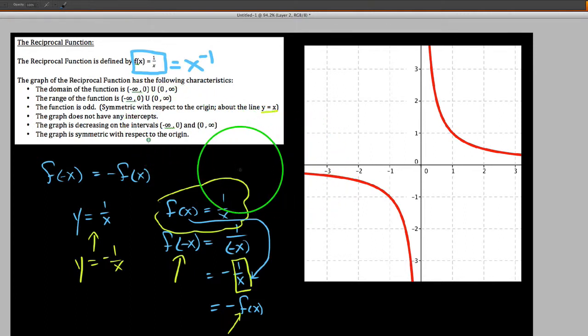we'd say on the intervals from way out here at negative infinity up to but not including zero, for those x values, my graph is going downhill. And for all the x values zero out to positive infinity, starting here and going all the way up to the right, my graph is also decreasing.